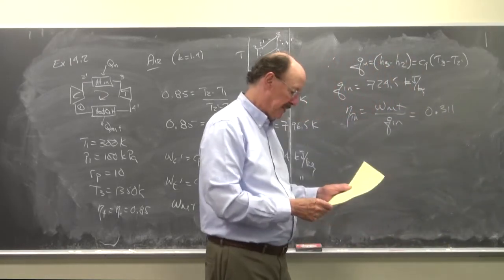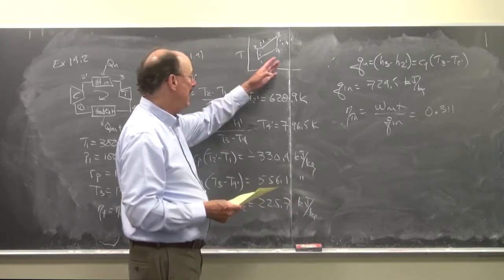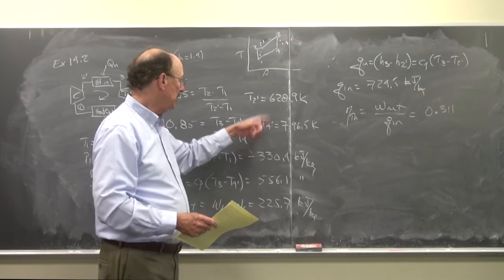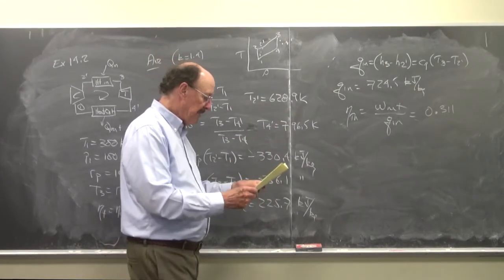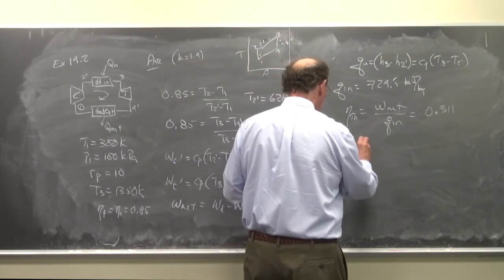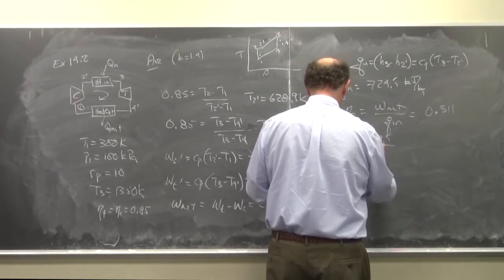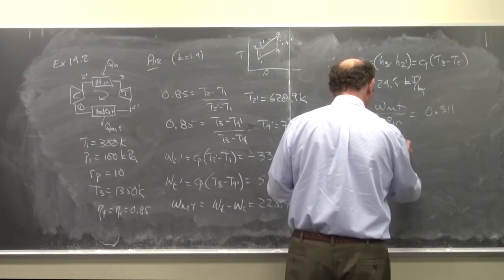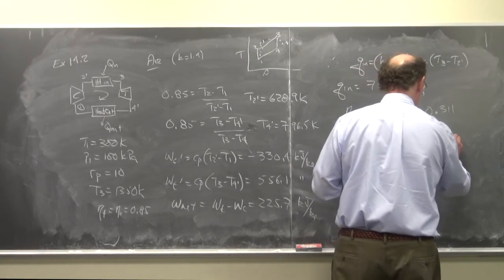31.1 percent. And so now if we compare this with the ideal cycle—I did this quickly, you can put in the numbers and substitute in and check out my math if you want—and now the change of the compressor work is 49.5 over 280.9, is equal to 17.6 percent increase.